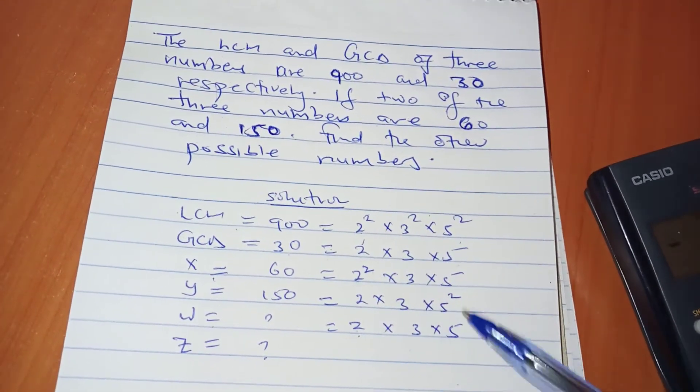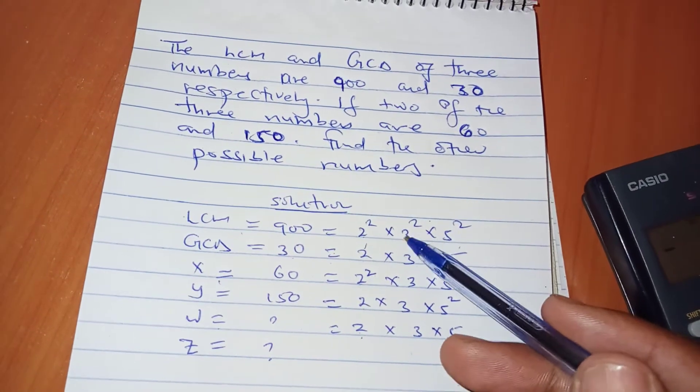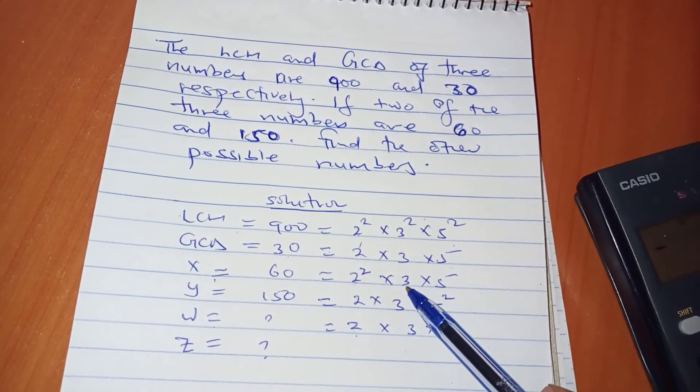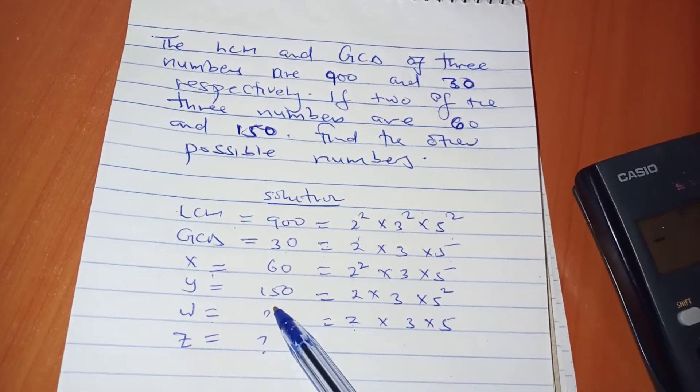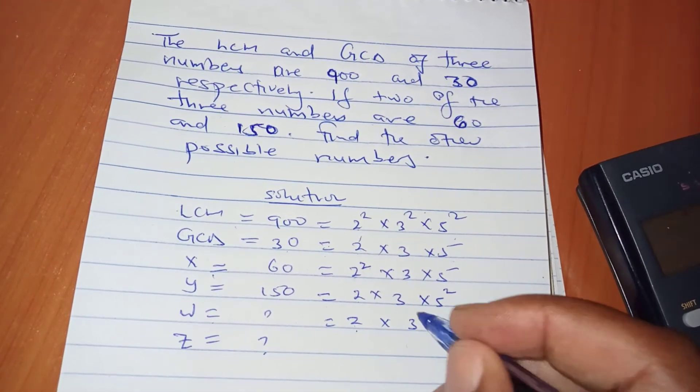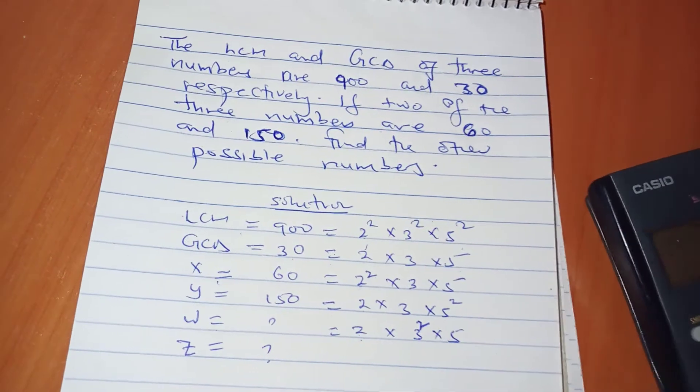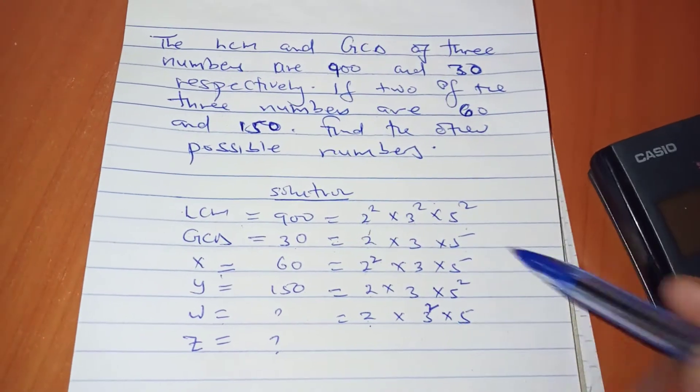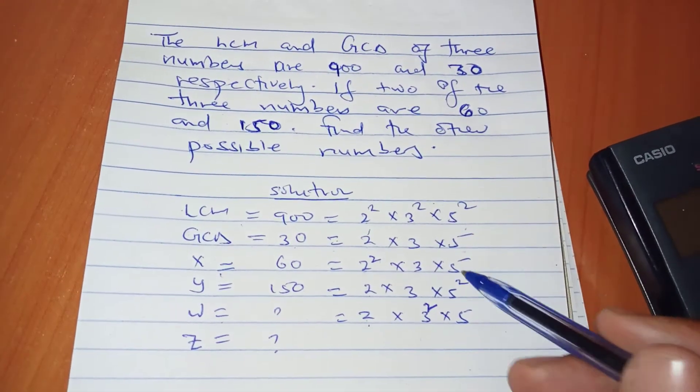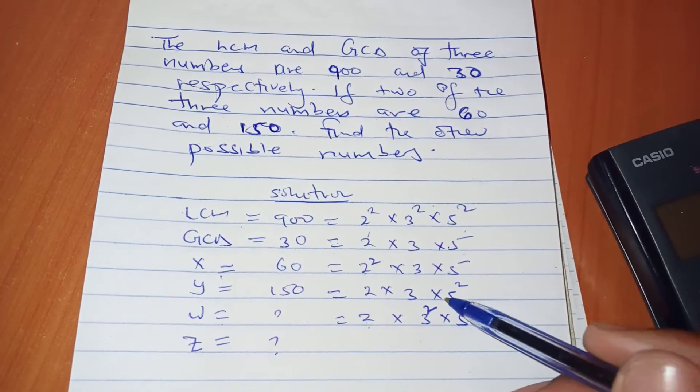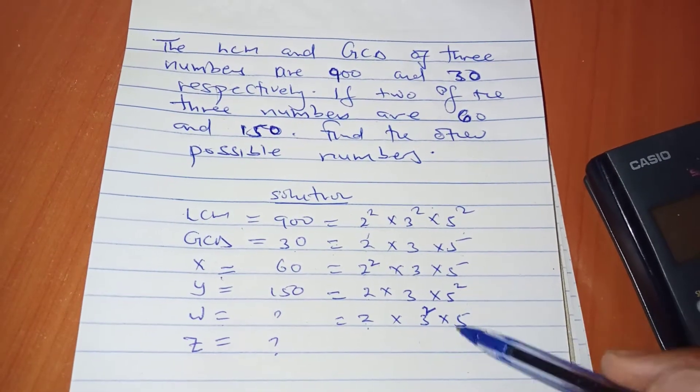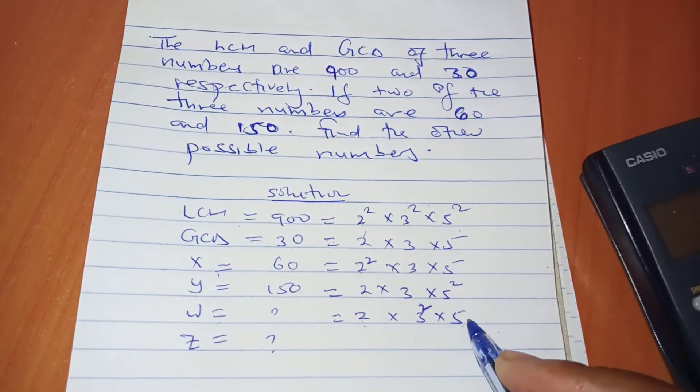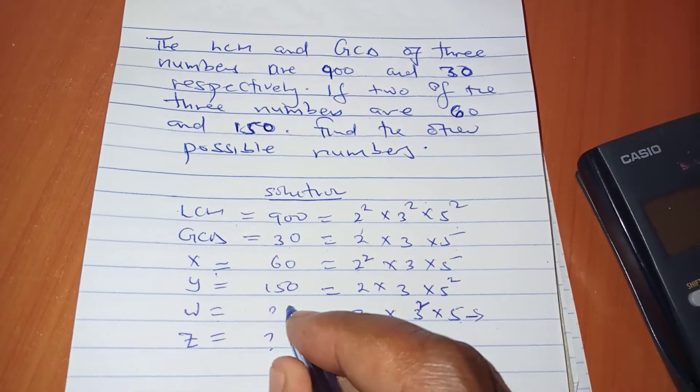Then for 3, LCM requires 3². When I look at the given numbers, 60 had only 3¹ and 150 had 3¹. So the incoming number should have 3² to accommodate what we have in the LCM. Then 5² is present in LCM and also in 150, so if one number has provided 5², the other doesn't have to. This gives us the minimum: 2 × 3² × 5 = 90.